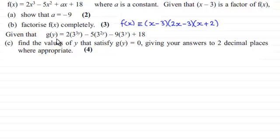Now for this part we're given that g(y) equals 2 multiplied by 3 to the power 3y, then minus 5 multiplied by 3 to the power 2y, and then minus 9 times 3 to the y, and then plus 18. And what we've got to do now is find the values of y that satisfy g(y) equaling 0, giving you answers to two decimal places where appropriate for four marks.